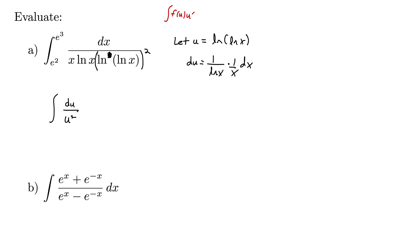Now we deal with our limits of integration. You can either deal with them up front, which I prefer, or evaluate the integral and then convert back to x's afterward. I prefer to get it out of the way up front so we never have to convert back. For the lower limit, u of e squared is natural log of natural log of e squared. Natural log of e squared is 2, so this becomes natural log of 2.